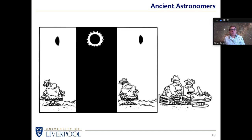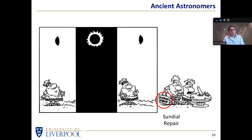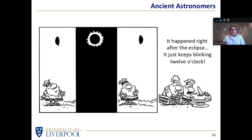What about ancient astronomical devices like sundials? Here we see an individual noticing that the sun is about to be eclipsed. In the middle dark panel we have a total eclipse, everything goes dark, and then after a little while the sun reappears, at which point he feels obliged to call in the sundial repairman. Because after the sun had disappeared and then reappeared, he says: 'It happened right after the eclipse - it just keeps blinking 12 o'clock.' Anybody with a microwave can understand that situation.